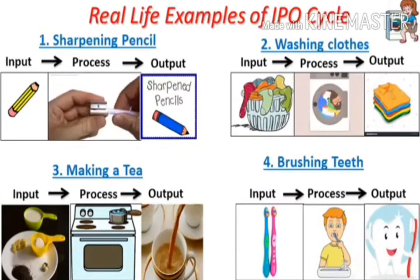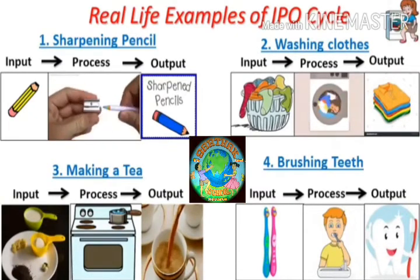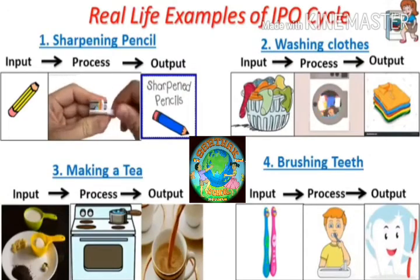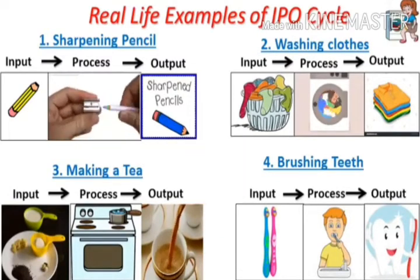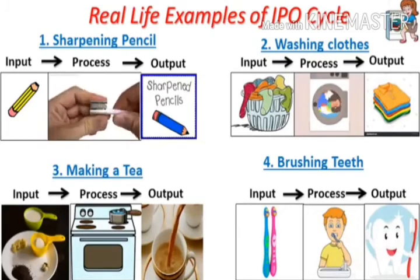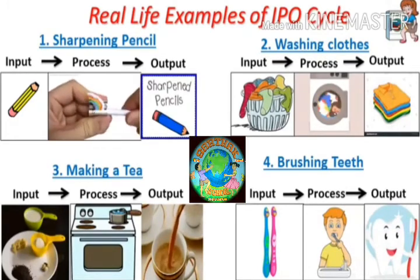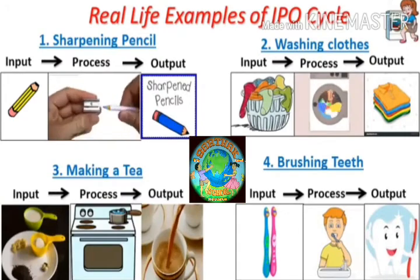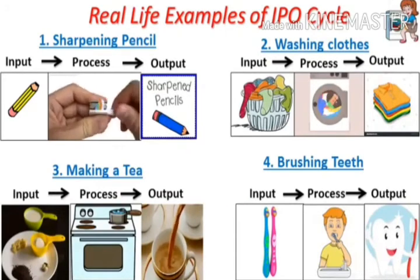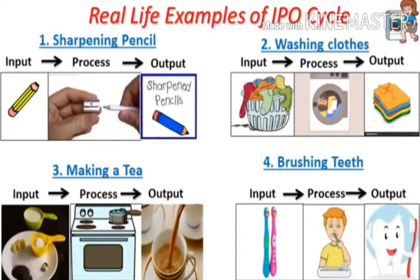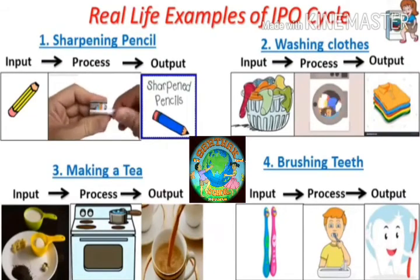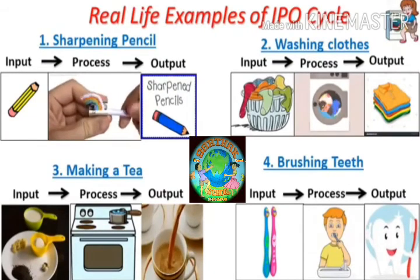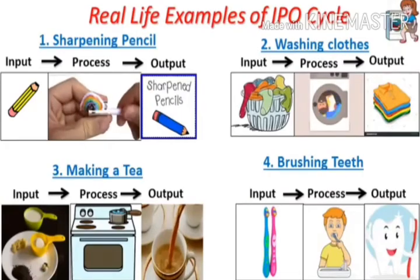In the third example, the ingredients of tea are the input, boiling is the processing, and tea is the output. In the fourth example, a brush is input, brushing is the process, and cleaning teeth is the output.